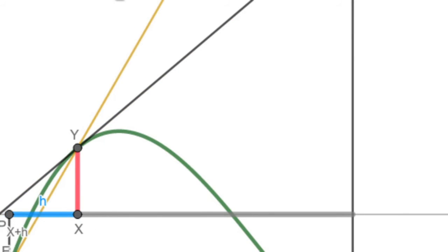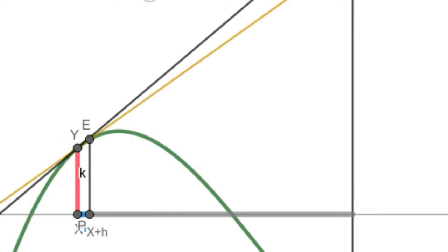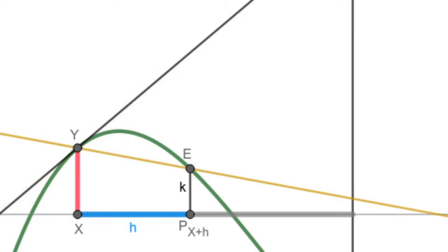So this limit process will be how we'll define derivatives, which will tell us the slope of the tangent line at a curve.